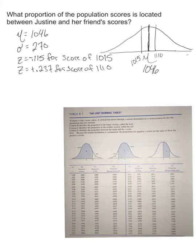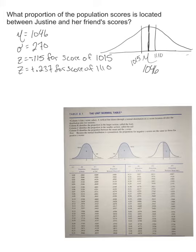What proportion of the population scores is located between Justine's score and her friend's score? We know the mean was 1,046 and standard deviation was 270. From the previous problems, Justine's friend had a Z score of −0.115 for a score of 1,015, and Justine had a Z score of +0.237 for her score of 1,100.